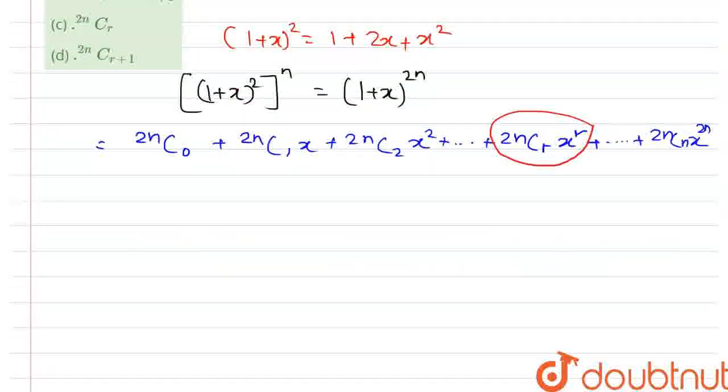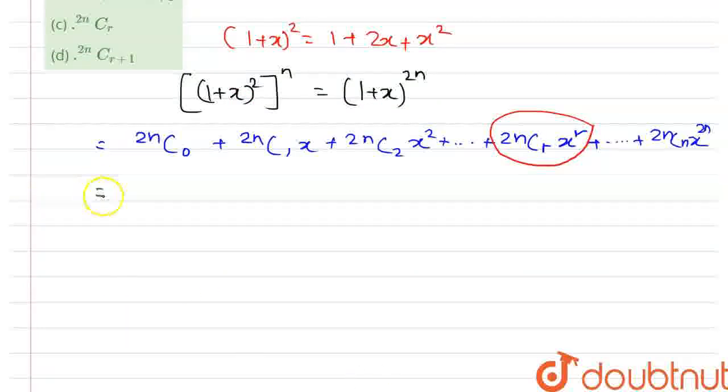So we can write that this will be equal to summation from r equals 0 to 2n of ²ⁿCᵣxʳ.